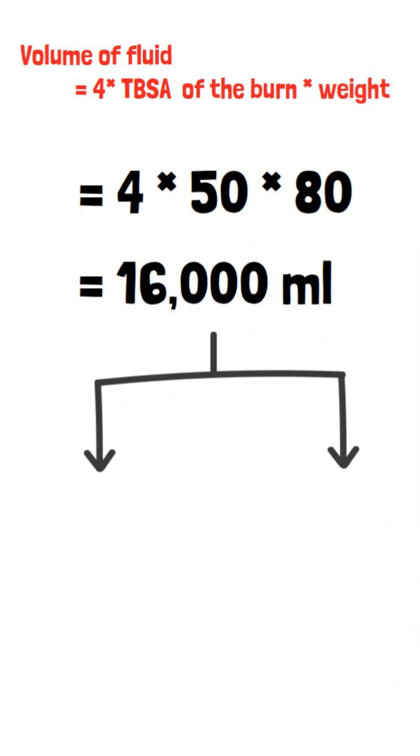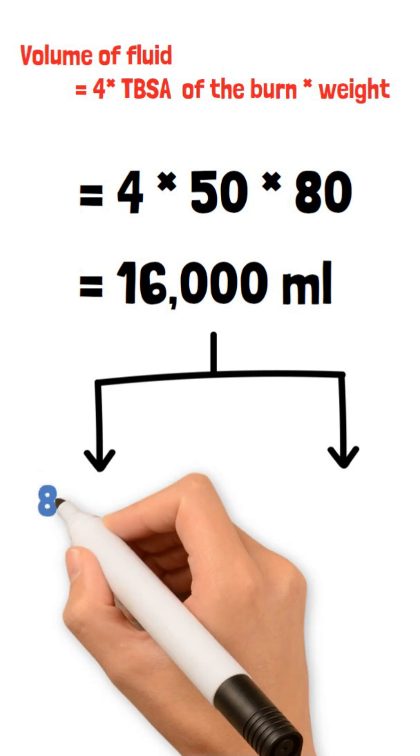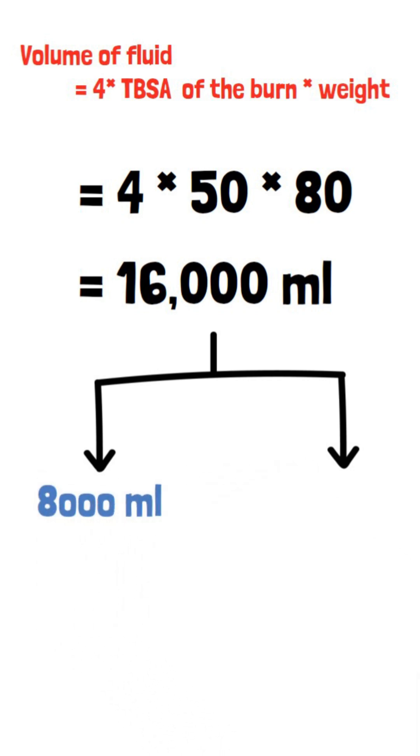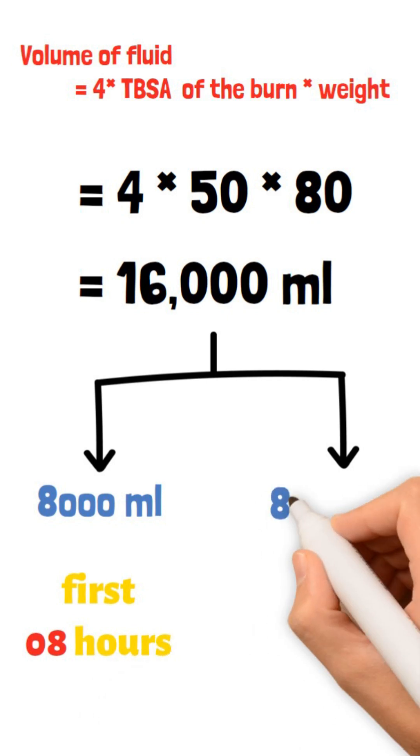According to the Parkland formula, half of that amount is administered within the first 8 hours starting from the time of injury onset, and the next half is given in the subsequent 16 hours. So in this patient, 8,000 milliliters is given in the first 8 hours.